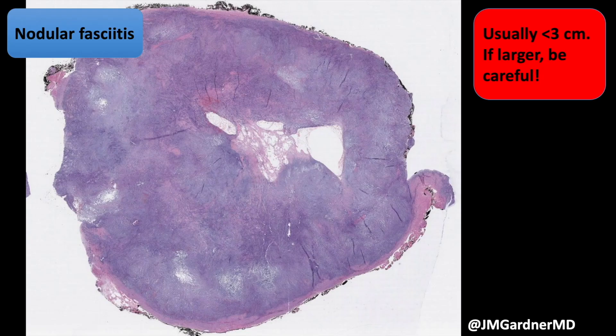Nodular fasciitis is classically on the extremity, but sometimes it occurs in the head and neck. When that happens in younger patients, like kids, it can be a bit more cellular and unusual-looking, and can be down in the muscle. It's important to know that nodular fasciitis is well described in the head and neck.